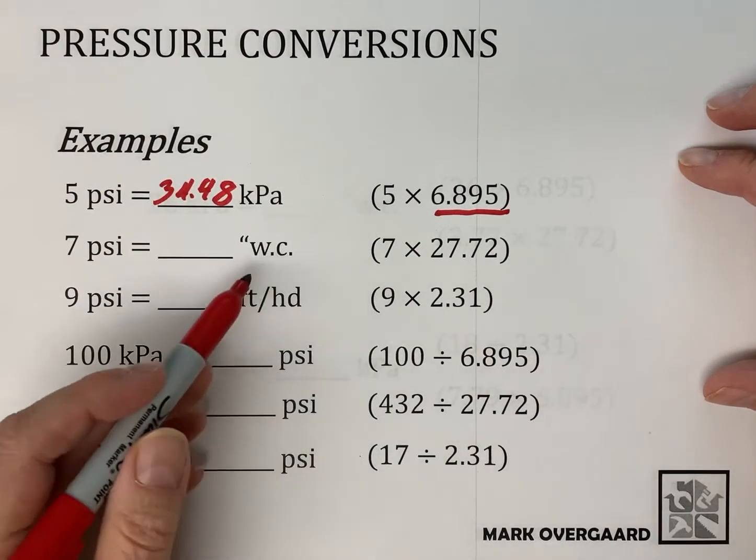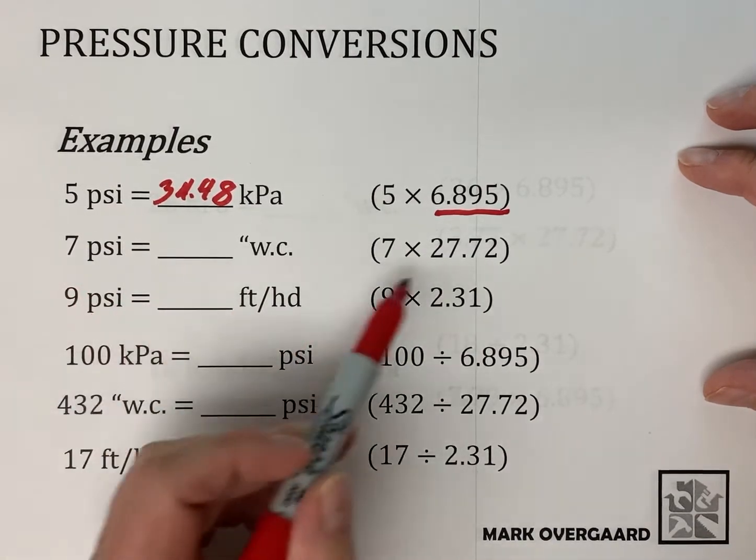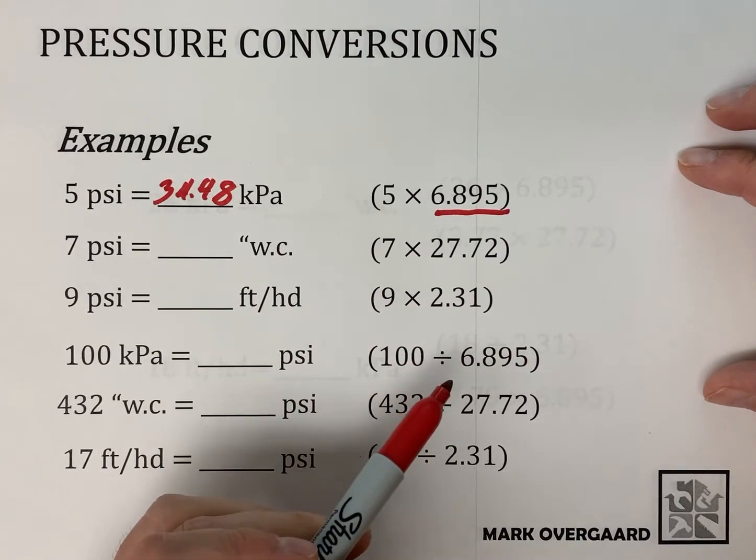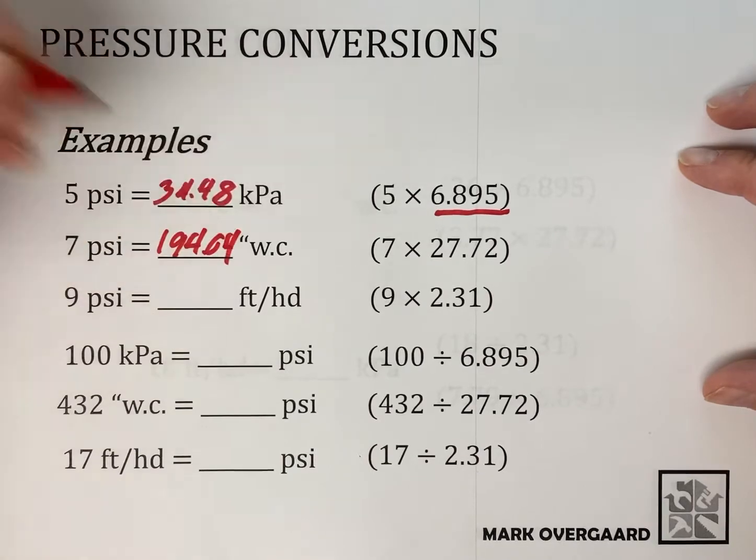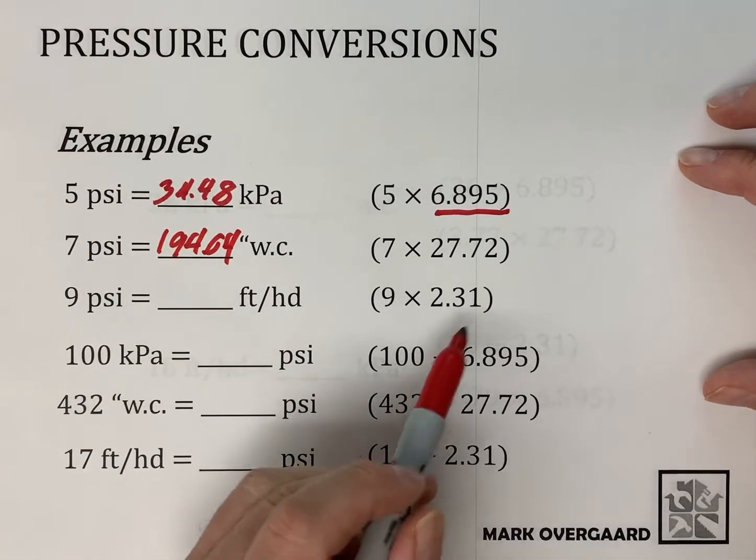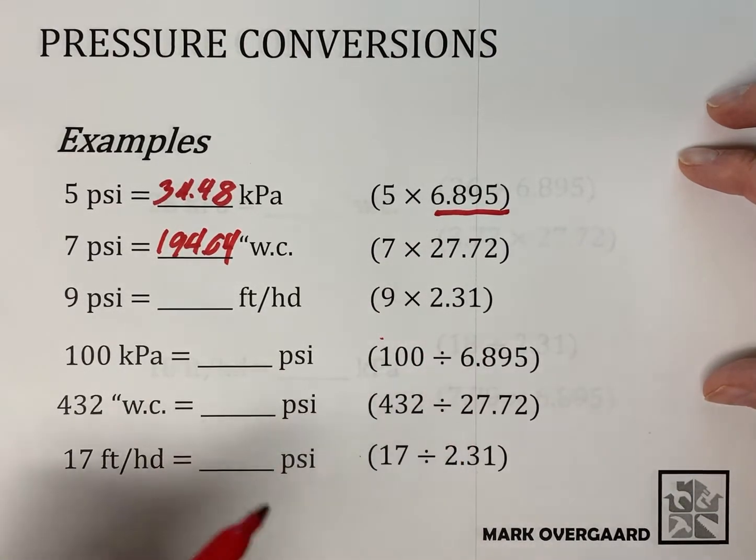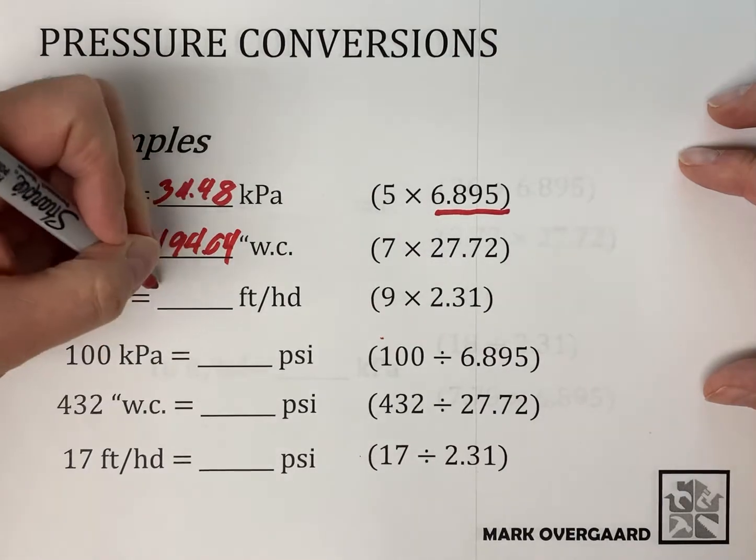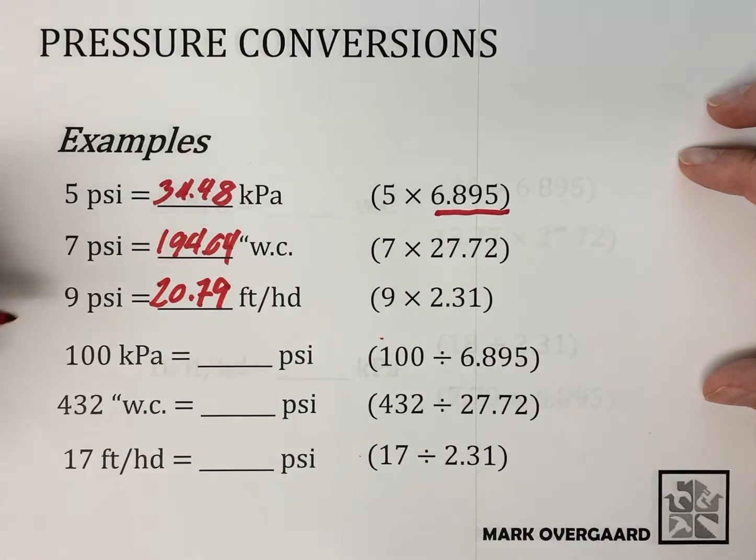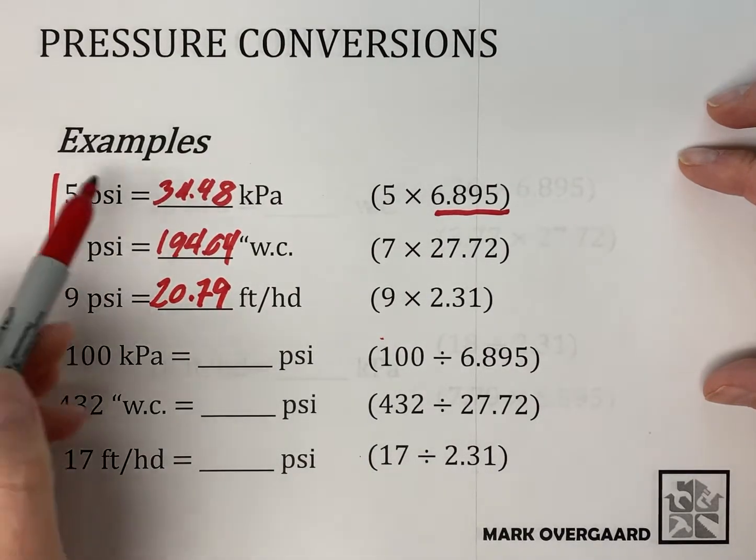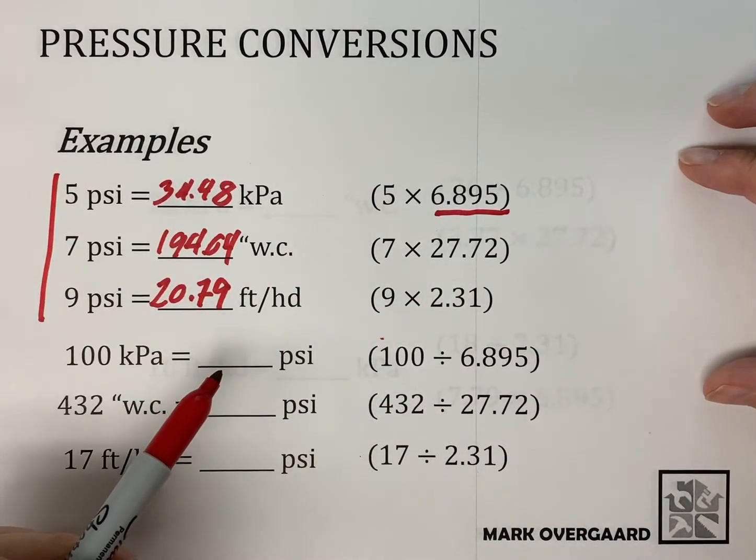We can do the same thing here with water column and feet of head. 7 PSI, well each PSI is 27.72, so we're going to go with 194.04 inches of water column. The feet of head, same concept. Nine times 2.31, 2.31 feet of head for every PSI, and we're getting 20.79 feet of head. Those are probably the more straightforward because we're starting with PSI and using these numbers to get to our kPa, water column, and feet of head.